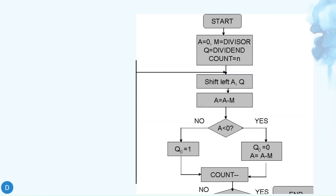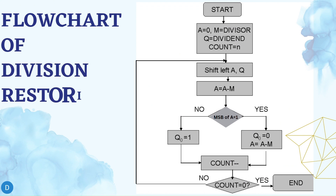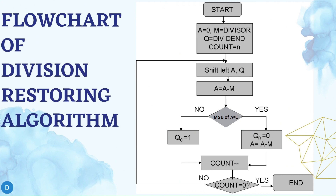Let us see the flowchart of the Division Restoring Algorithm. Step 1: The registers are initialized with corresponding values — Q is equal to the dividend, M is equal to the divisor, A is equal to 0, and N is equal to the number of bits in the dividend. Step 2: The contents of registers A and Q are shifted left as if they are a single unit.